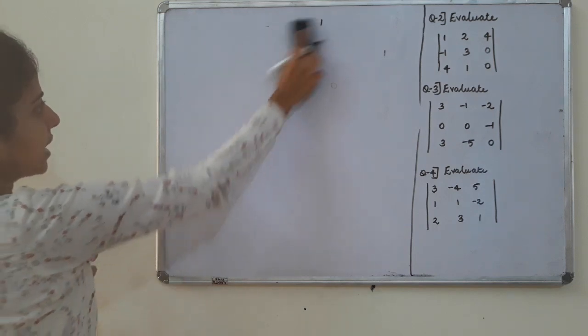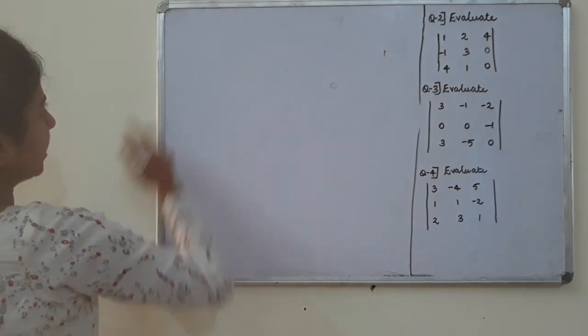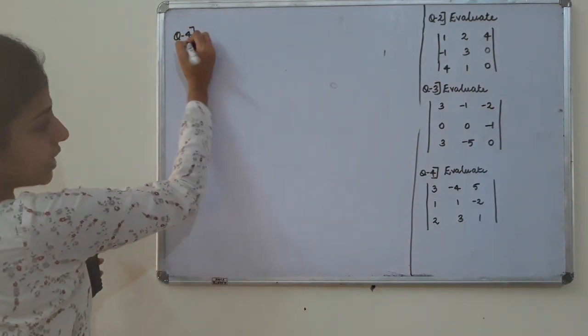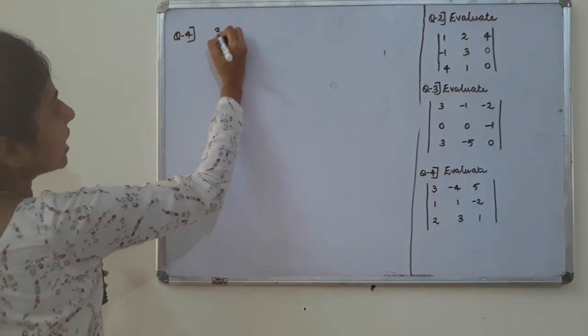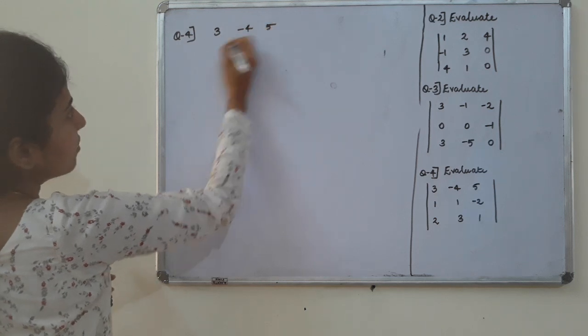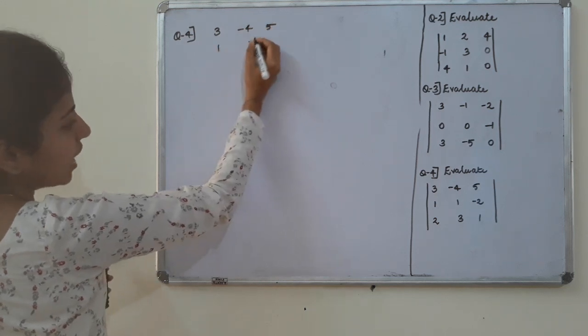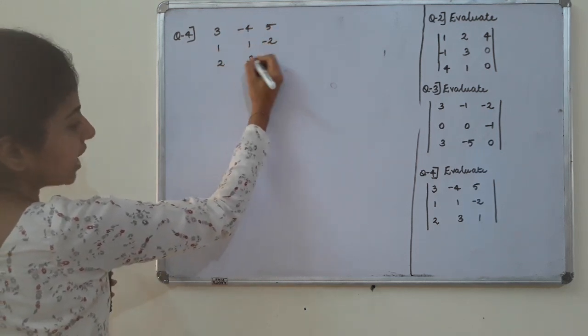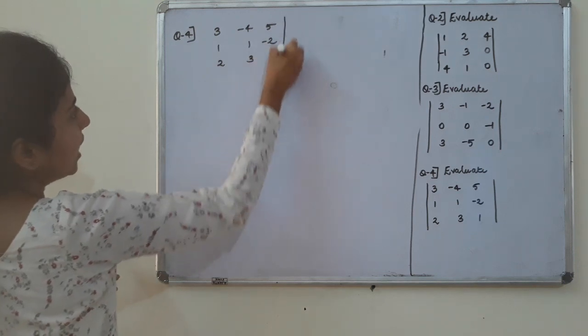Question number 4: the matrix entries are 3, minus 4, 5, 1, minus 2, 2, 3, 1.